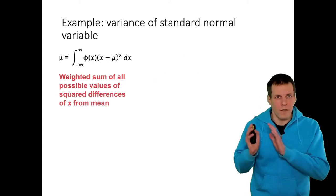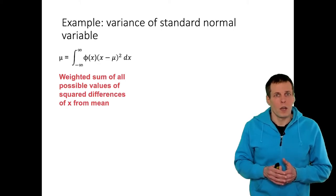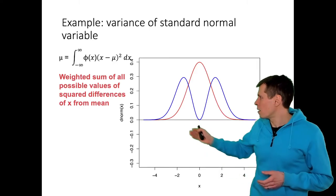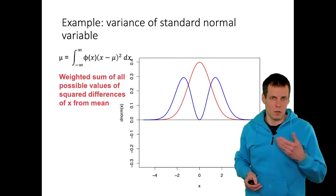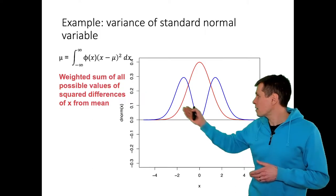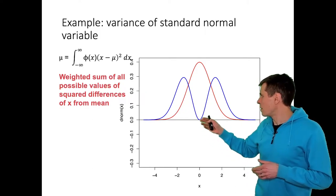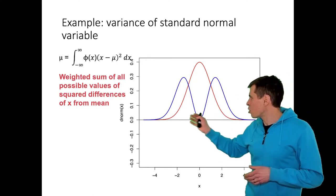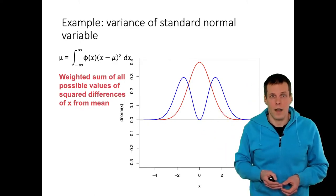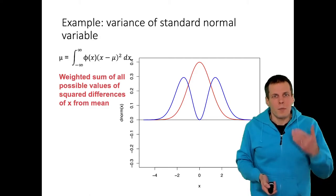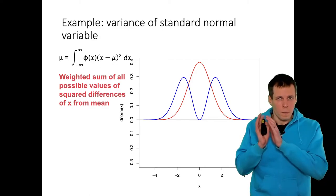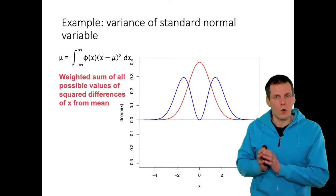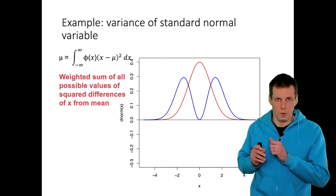To estimate the variance of a normal distribution, we calculate the average squared deviation from the mean. We take (x minus mu) squared, multiply by the probability density, and the area under the resulting curve equals one — which is the variance of a standard normal variable. In practice, the choice of integration points is critical because it determines how well the integral works. Fortunately, there are good ways of choosing integration points.